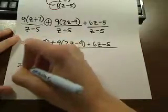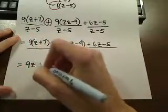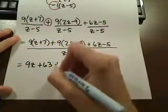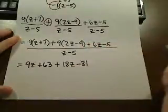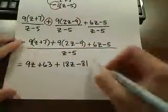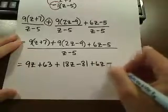So let's go ahead and distribute the 9s here. So this is 9z plus 63, and 18z minus 81, and then we have our 6z minus 5.